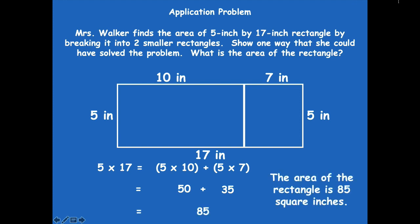Notice you could use different numbers as long as you come up with 85. For example, you could have chosen 9 and 8 to give you 17 as one of your side lengths. It's just about how you choose to break apart the rectangle into two smaller rectangles. Let's get started with our lesson.